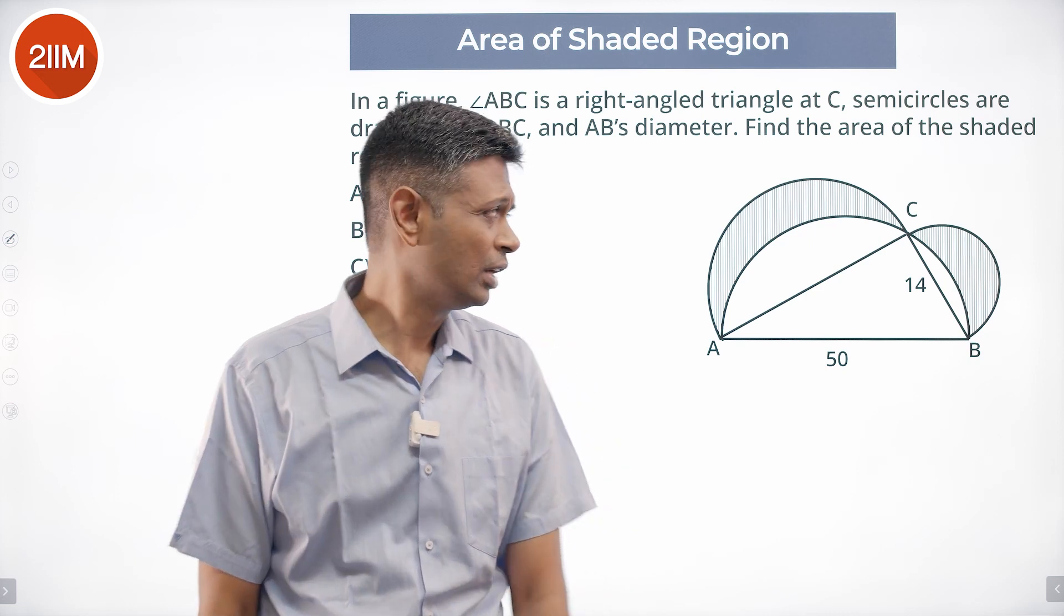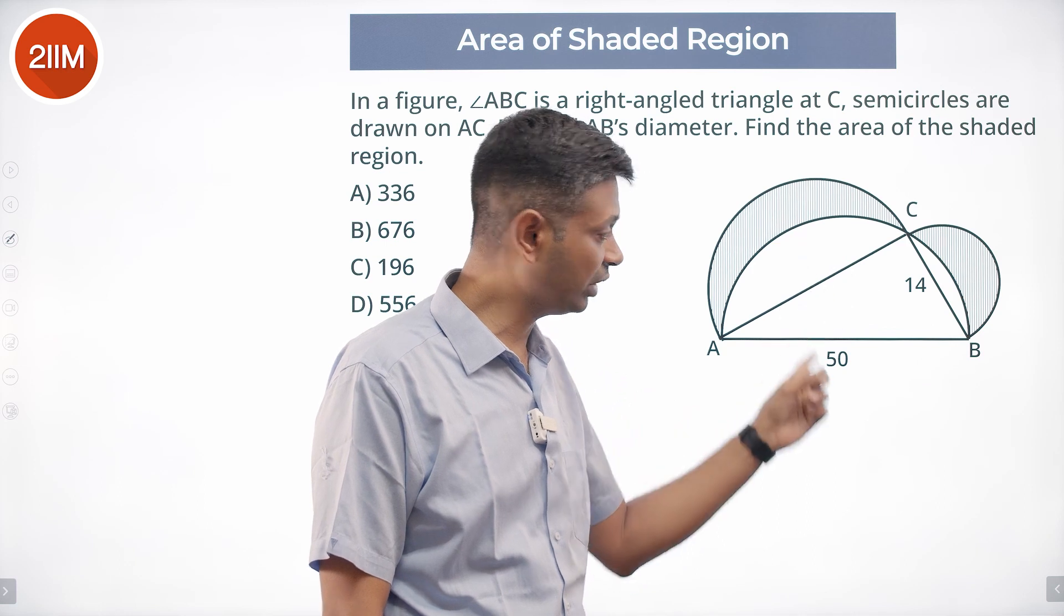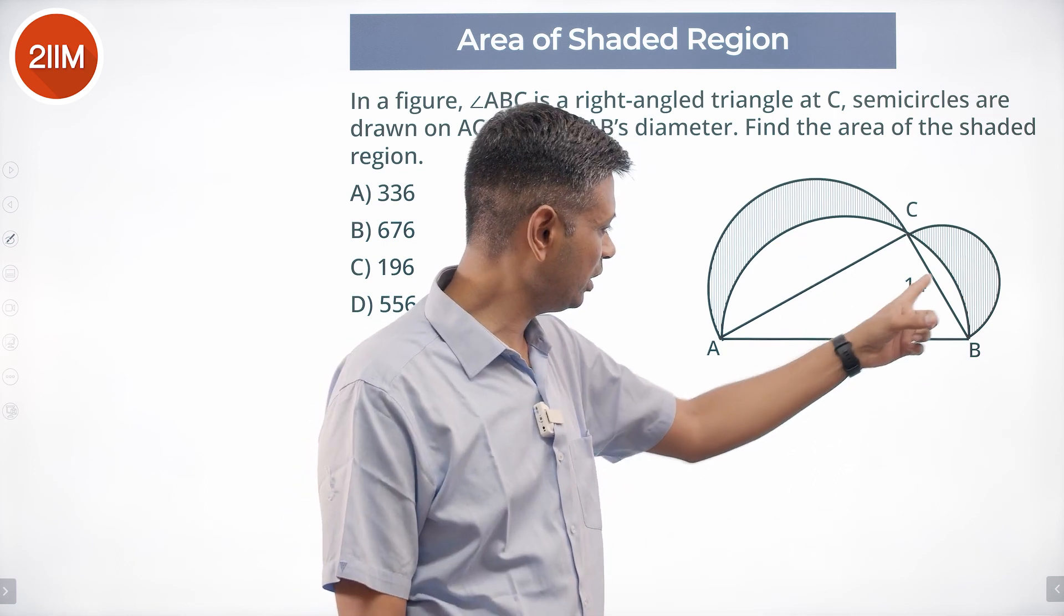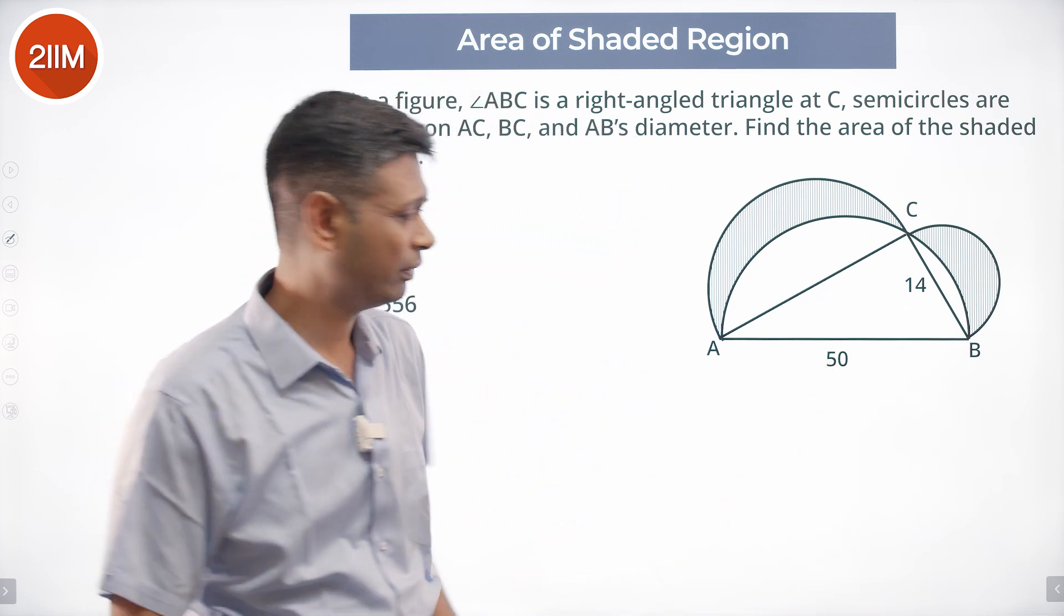I will build this step by step methodically. So first of all, this is 14 and 50. 14 is the hypotenuse, 50. This is the ratio 7 and 25. 7-24-25 is a Pythagorean triplet.